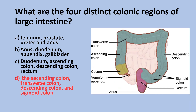The answer is D. The large intestine includes the ascending colon, transverse colon, descending colon, and sigmoid colon. The functions of the large intestine include the formation, storage, and elimination of feces; the absorption of vitamins; the absorption of water and electrolytes; and the production of antibodies.